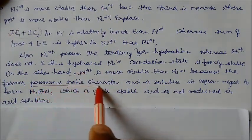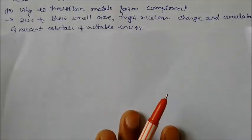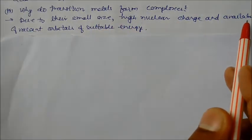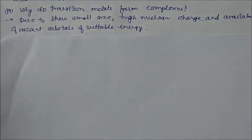Why do transition metals form complexes? Due to their small size, high nuclear charge and availability of vacant d orbitals or vacant orbitals of suitable energy. That's why they can form complexes.